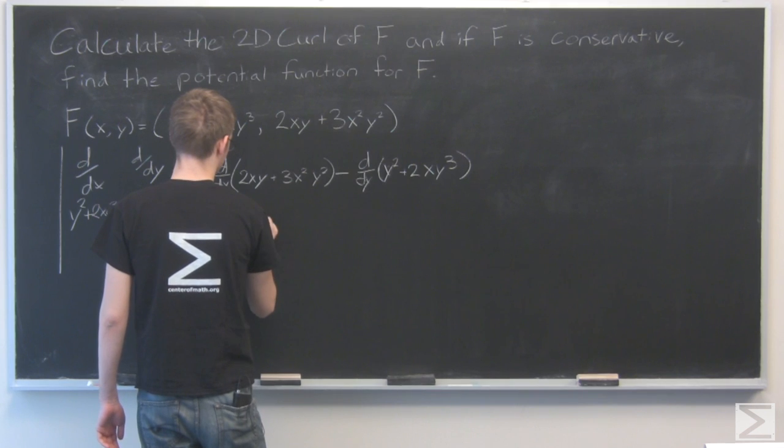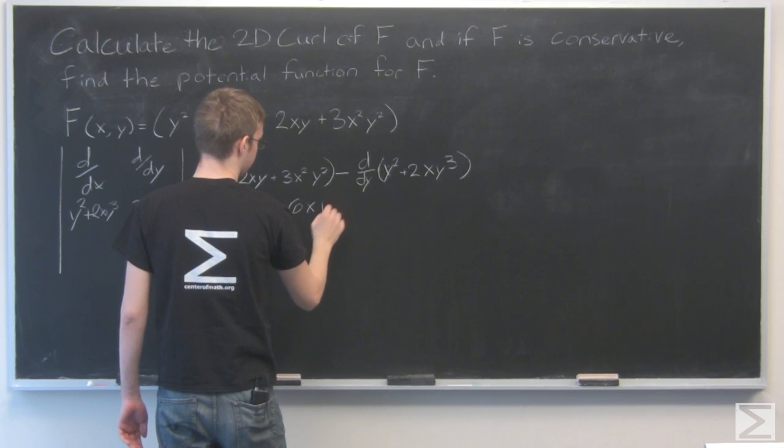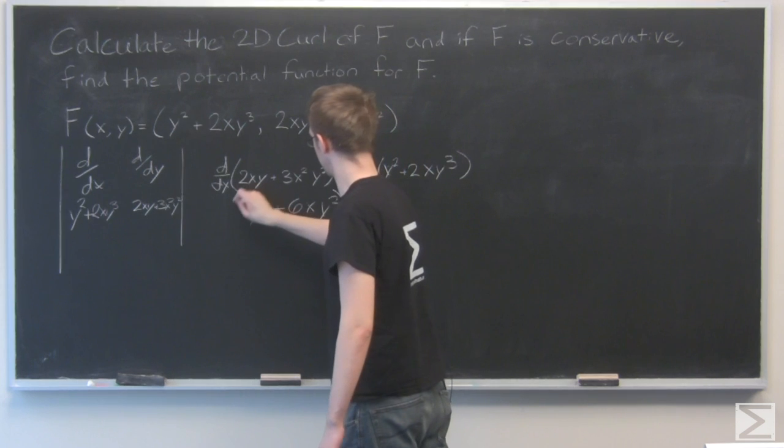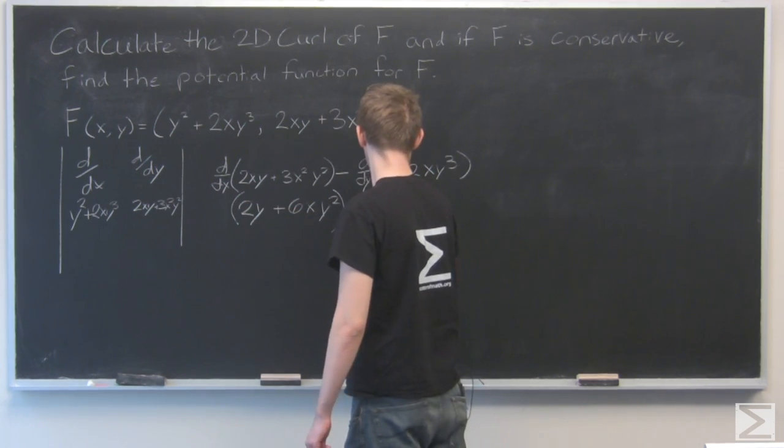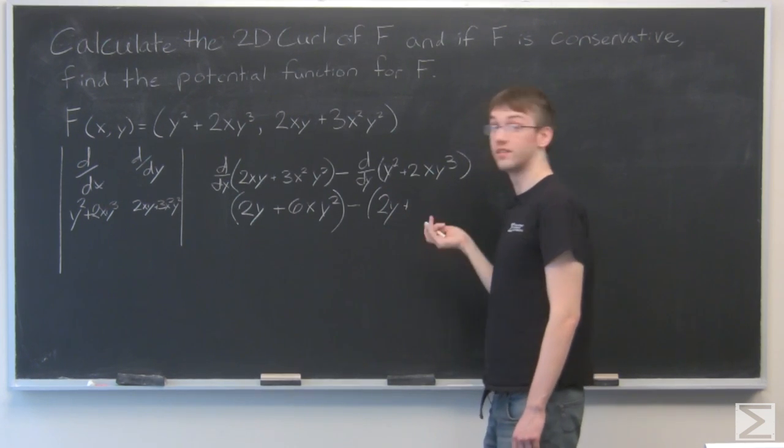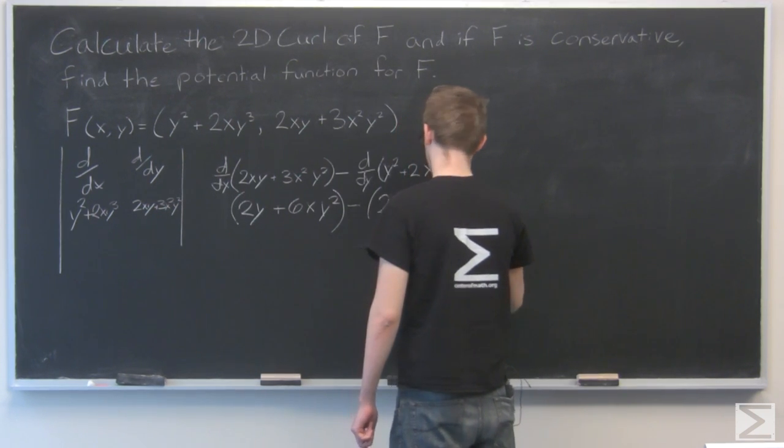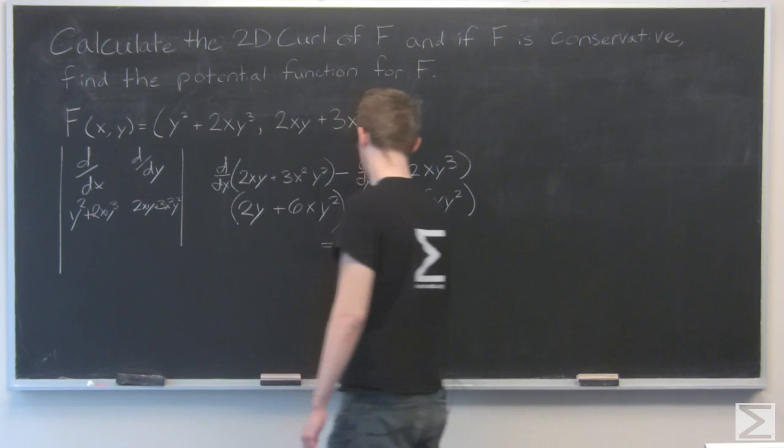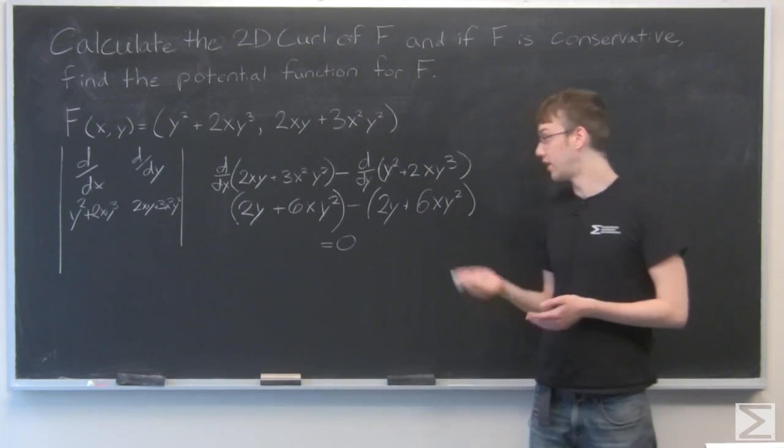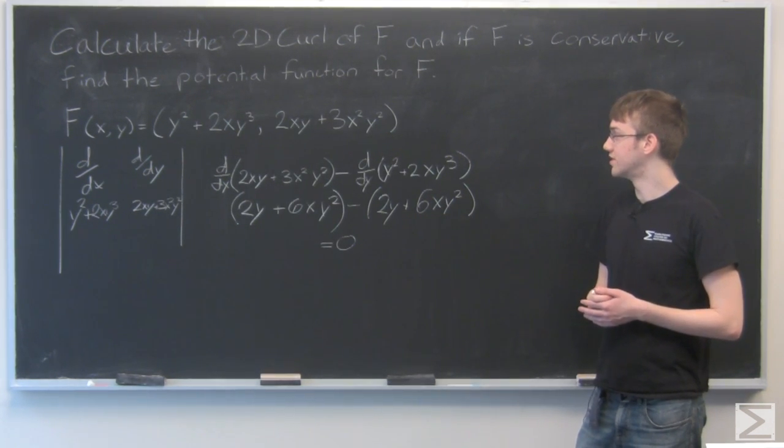That gives us 2y plus 6xy squared. And this gives us 2y plus, again, 6xy squared. So here we can see that the curl is equal to 0. Now we know if the curl is equal to 0, that means that this vector field is indeed conservative.